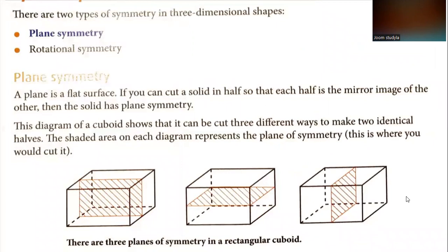There are two types of symmetry in three-dimensional shapes: plane symmetry and rotational symmetry.